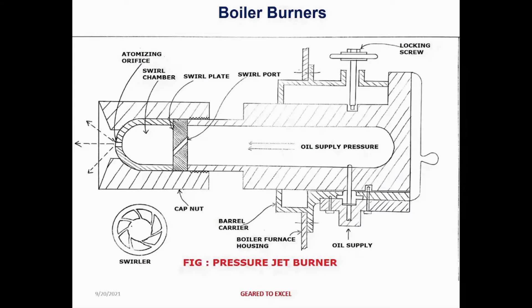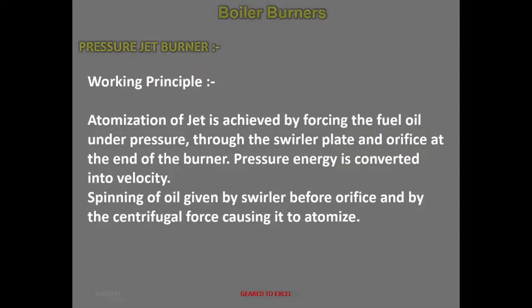Working principle of the pressure jet burner: atomization of the fuel jet is achieved by forcing the fuel oil under pressure through the swirler plate and orifice at the end of the burner. Pressure energy is converted into velocity; spinning of the oil is given by the swirler before the orifice, and by centrifugal force, causing it to atomize.